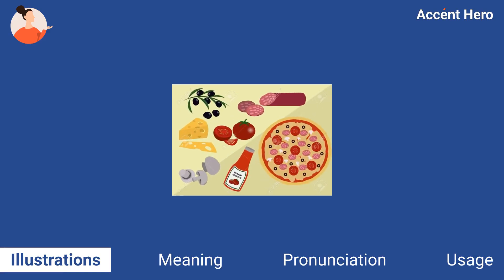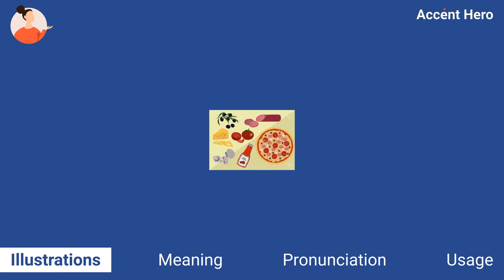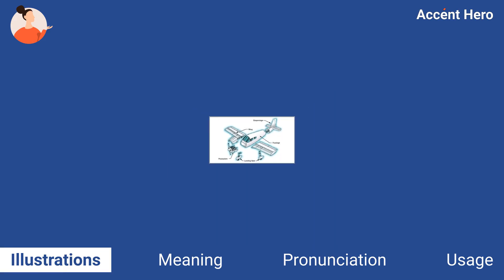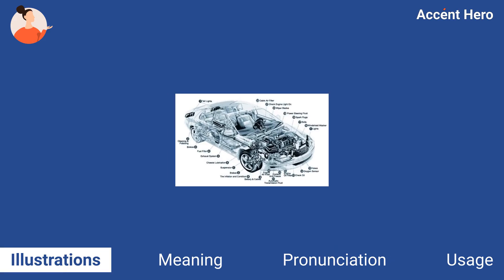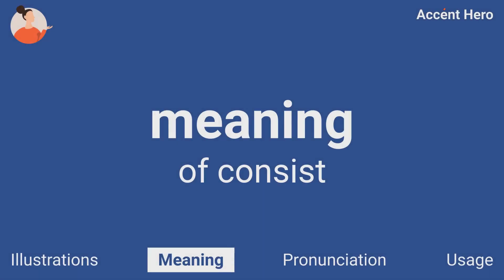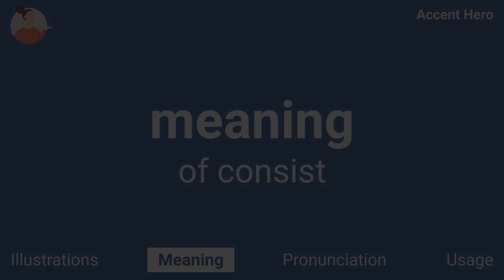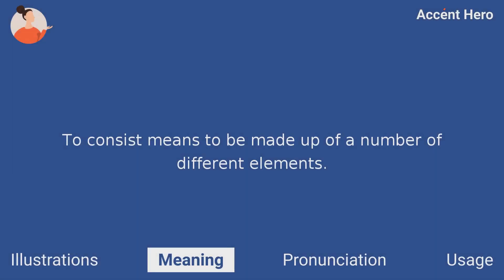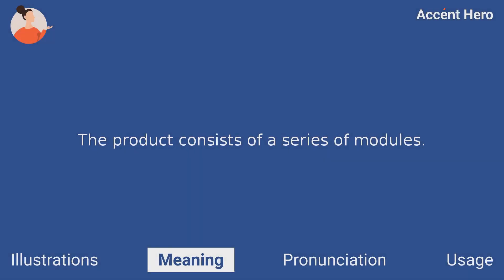Illustrations. Meaning: Consist is a verb. To consist means to be made up of a number of different elements. For example, you can say: the product consists of a series of modules.